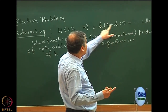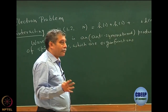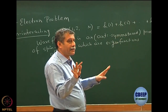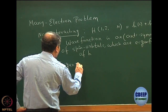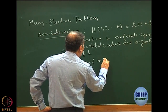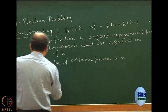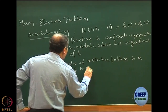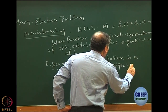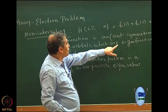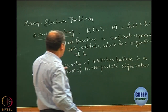It may also happen that h1, h2, h3 are all different; even in that case the problem is trivial. You simply solve h1, h2, etc., and then make an anti-symmetrized product. The energy or eigenvalue of the n-particle problem is simply a sum of n one-particle eigenvalues. You solve the one-particle problem, get the eigenfunctions whose product is the total eigenfunction, and the sum of eigenvalues is the total energy.